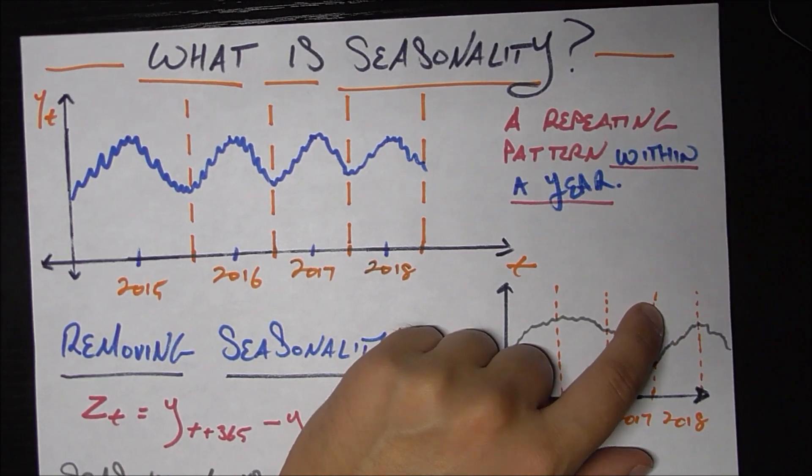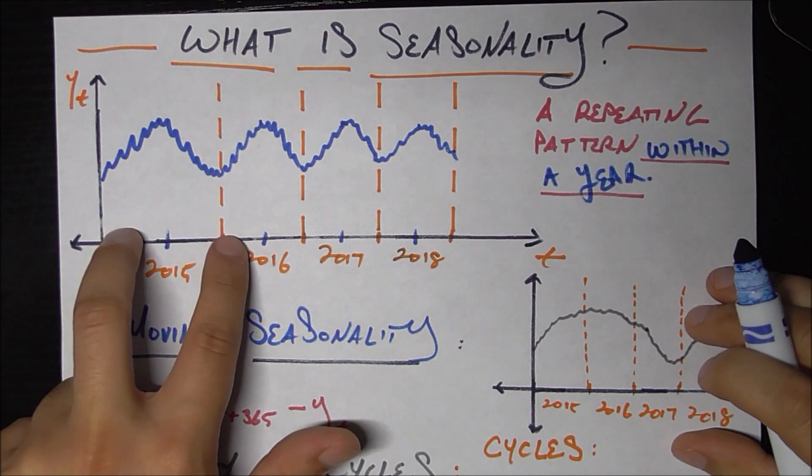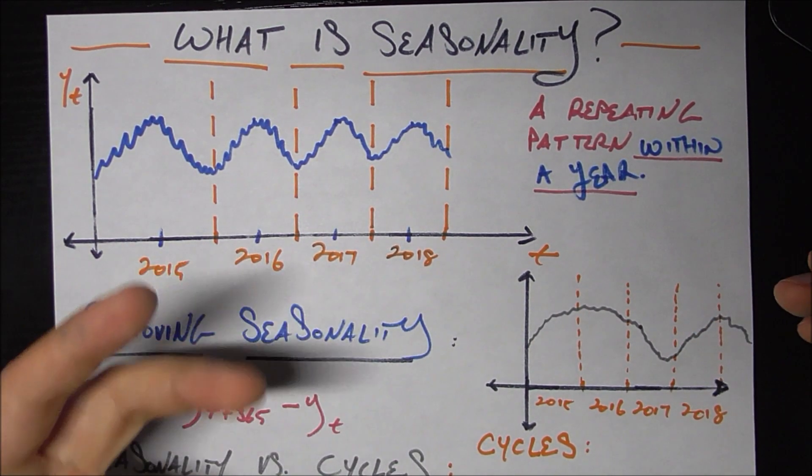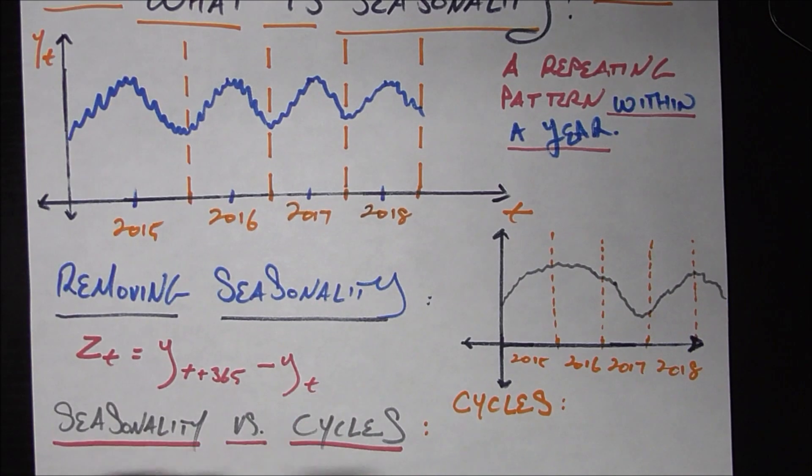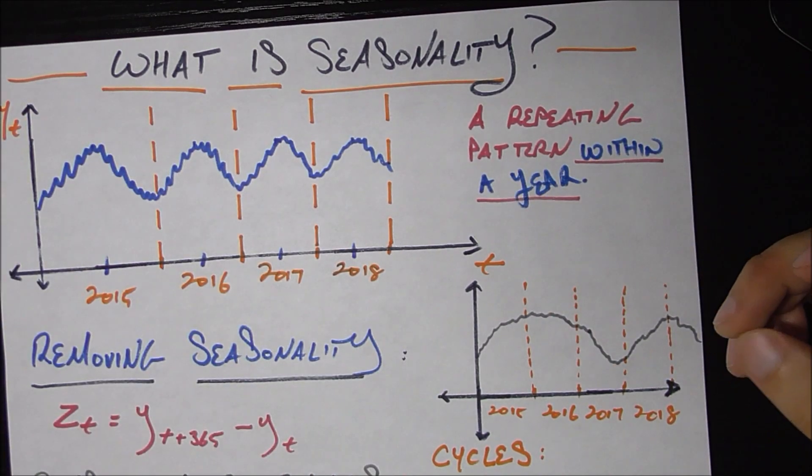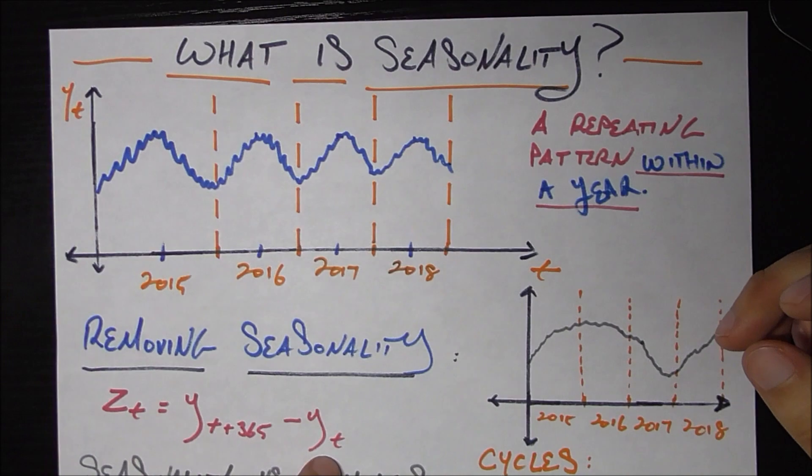It's a repeating pattern within a year. And this is an important distinction to make. So it needs to be within a year to be seasonality. So for example, there's something else in time series called a cycle, which is a very similar kind of idea, but it's not the same because that takes place over the course of years. And that's also not predictable. We'll talk about that very briefly at the end of this video.